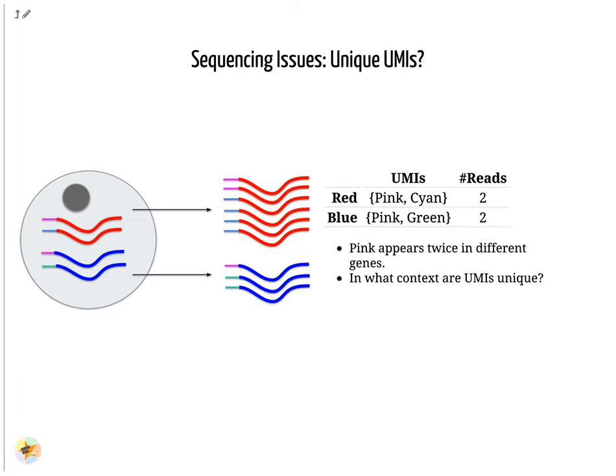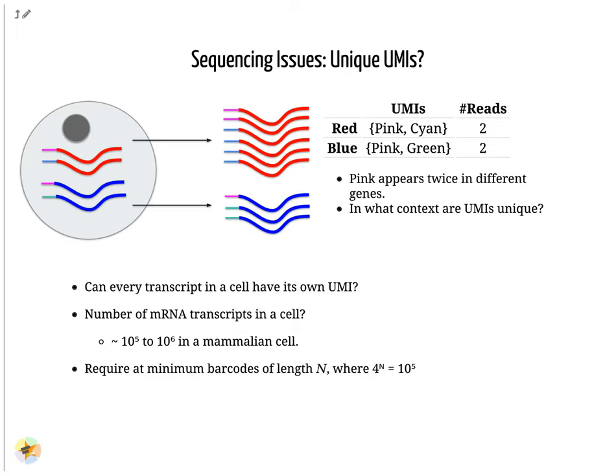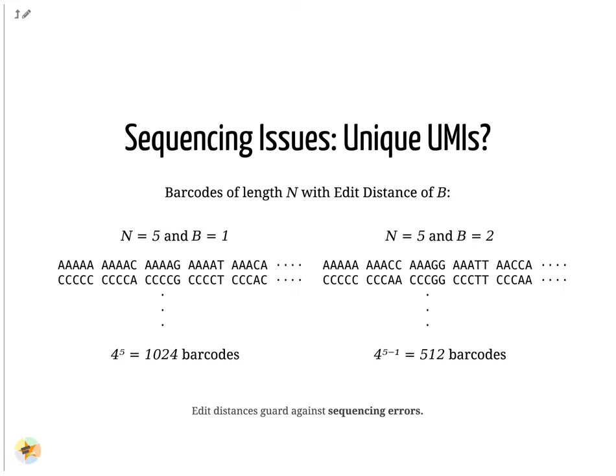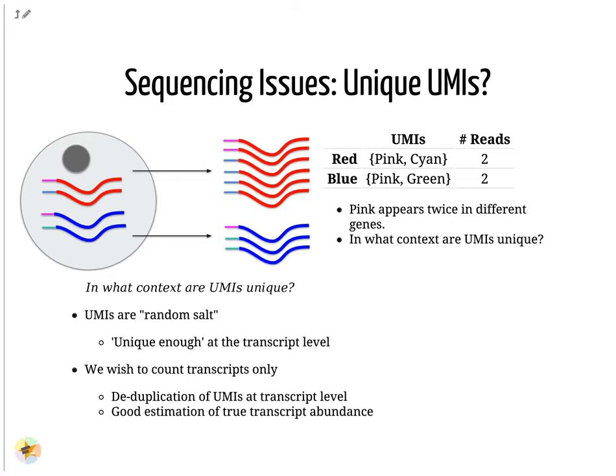UMIs are relatively random, but not truly random. Notice that the pink UMI appears twice, once in the blue transcript and once in the pink transcript. This is due to there being often more transcripts than available UMIs, both of which are dependent on the number of transcripts in a cell and the length of the barcode. Consider a set of barcodes of length five with an edit distance of one between adjacent barcodes, and another set with an edit distance of two. The former is not robust against common sequencing errors of one base pair, but the latter only allows for half the number of barcodes. This trade-off between the number of available barcodes and guarding against sequencing errors is instrumental in the design of cell barcodes and UMIs. In the context of amplification, UMIs do not need to be unique; they just need to be random enough to deduplicate transcripts in order to give a more accurate estimate of the number of transcripts within a cell.